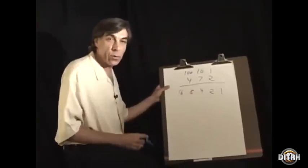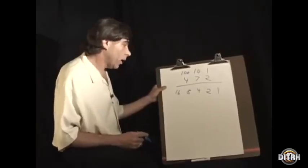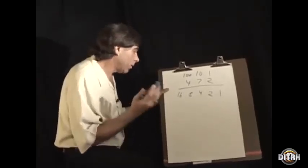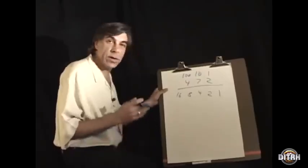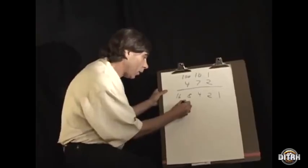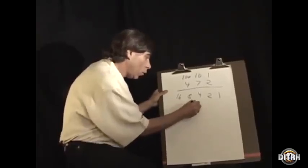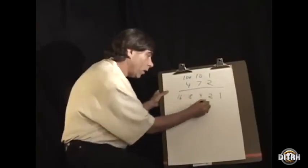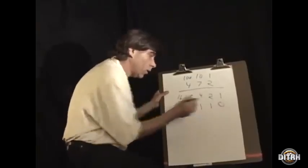So if a computer wants to look at the number, let's say fifteen, it's one eight, one four, one two, and no ones.